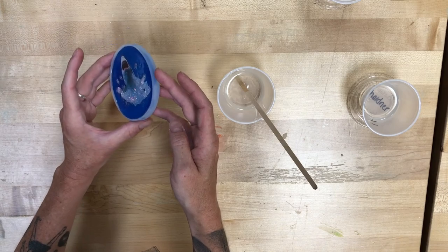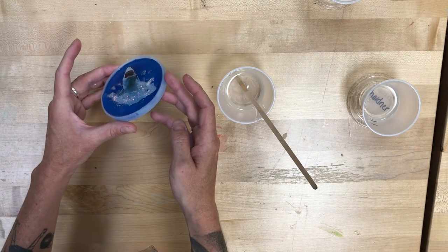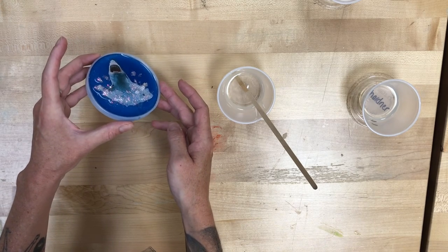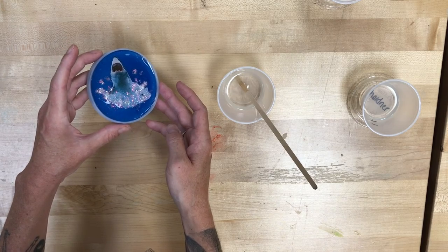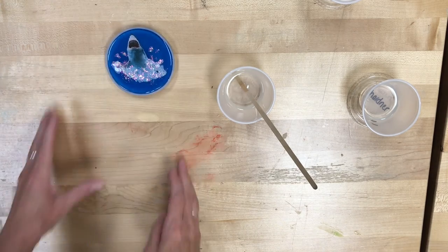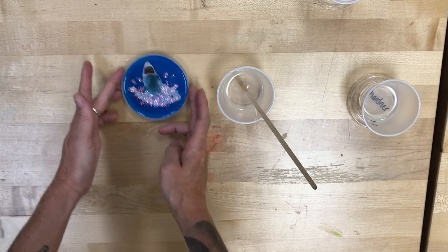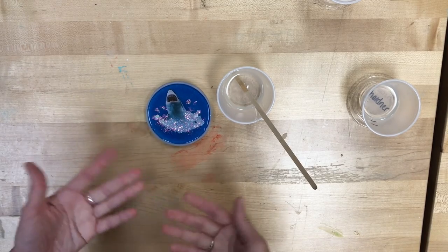And then, your last little bit is just to let that sit again for another 12 hours until it's totally solid and dry. Then you can remove that outer coaster mold, and you will be all set for your very own shark coaster.